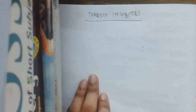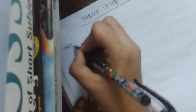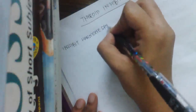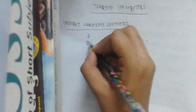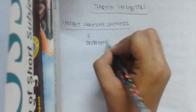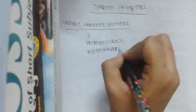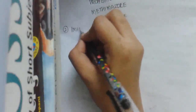These are called antithyroid drugs or thyroid inhibitors. Let us classify them. The first type are drugs which inhibit hormone synthesis. These mainly include propylthiouracil, methimazole, and carbimazole. These are the drugs which inhibit thyroid hormone synthesis.